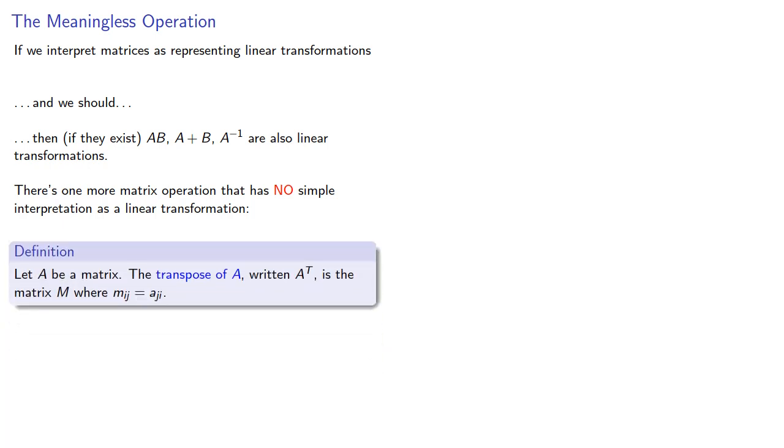Let A be a matrix. The transpose of A, written A^T, is the matrix M where the component M_ij is A_ji. In other words, we switch the rows and columns, or visually we flip the matrix across its diagonal.